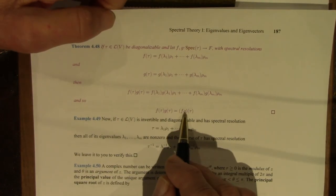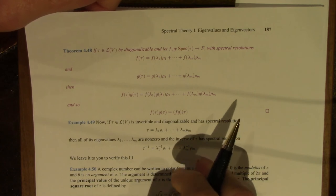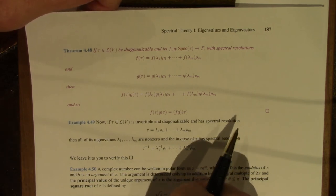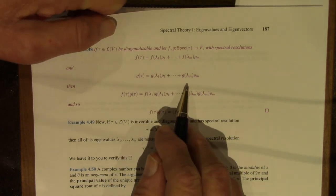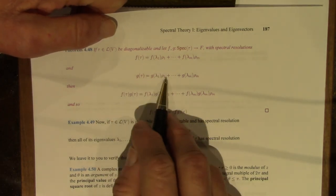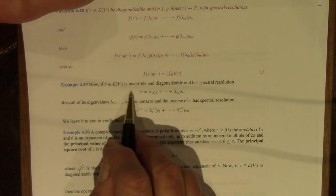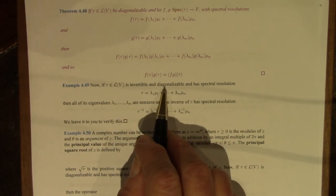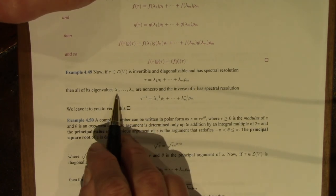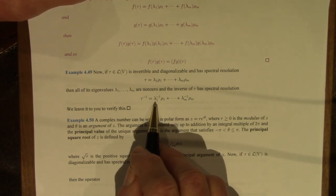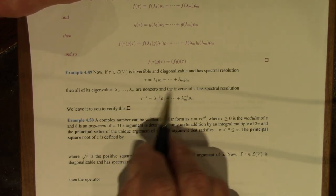A couple of examples of spectral resolutions. This is not a formula to memorize — you should think about it until you can reason through it yourself. If tau is invertible and diagonalizable, and it has this spectral resolution where the eigenvalues are all non-zero and hence have multiplicative inverses, then the spectral resolution of tau inverse will replace each lambda_i with 1/lambda_i.